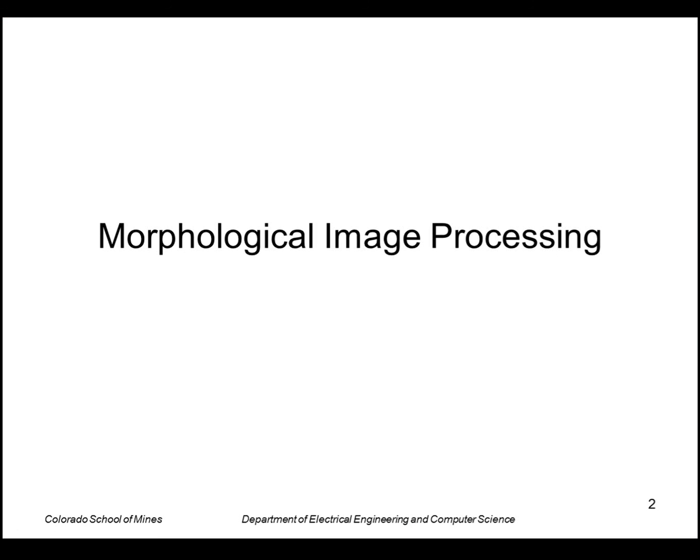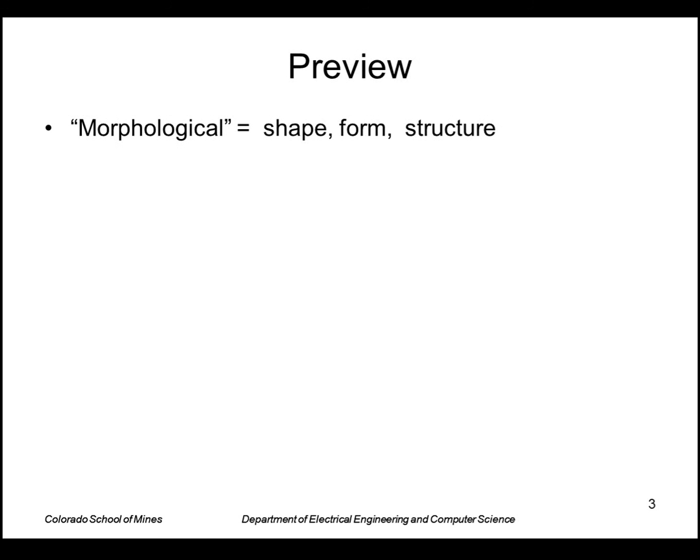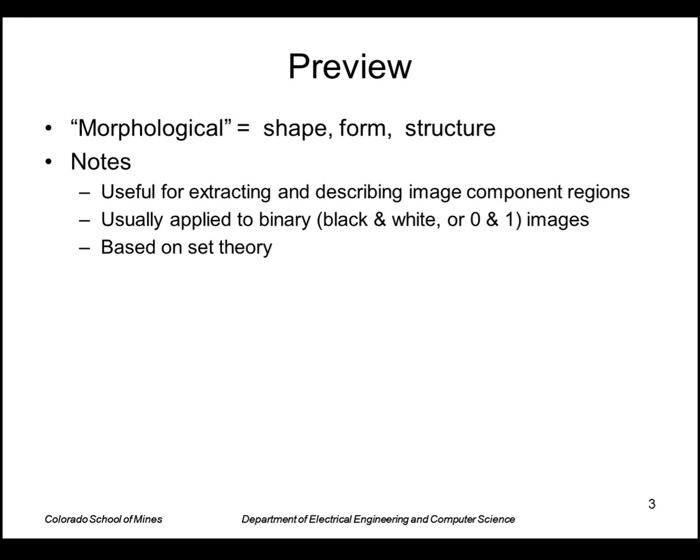Today I'm going to talk about morphological image processing. Morphological means shape, form, or structure. These algorithms are useful for extracting and describing image component regions. They're usually applied to binary or black and white images, although we'll see later they can also be extended to grayscale, and they're founded on the notions of set theory. Unlike other algorithms we've been looking at in this course which transform images to images, these algorithms are useful for extracting features of images or measurements of image regions.